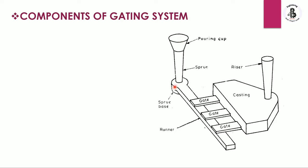Once collected into the sprue base, it is connected with the runner. The runner carries the molten metal and is connected with different gating systems. Depending on the shape, size, and complexity, different gating systems are provided. In this figure there are three gating systems connected with the runner, and these gating systems are also connected with the castings or mold cavity. Finally, there is a riser located in the cope side of the sand casting process.